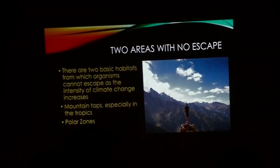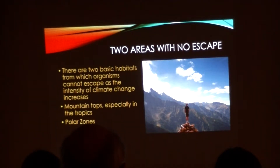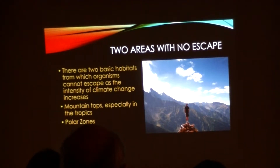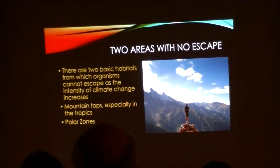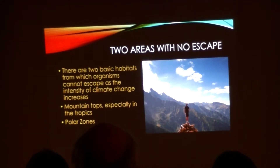On a global scale, there are basically two areas where organisms cannot escape from, and this is true of animals as well as plants. There are two basic habitats in which organisms cannot escape as the intensity of climate change increases. The first of these is mountaintops — if a species is well adapted to living on a mountain at a certain elevation, it can go up that mountain if the temperature warms, but once it gets to the top, it can't get any higher. The other is the polar zones, because polar zones are also an extreme in terms of cold, and if organisms encounter a change in those conditions, there's no place colder for them to retreat to. This is a huge issue in terms of extinction.